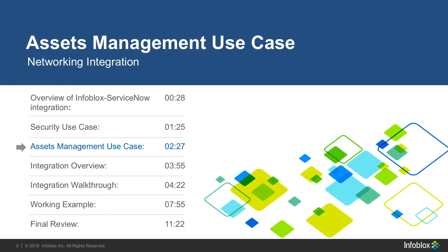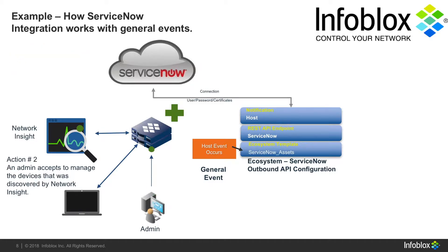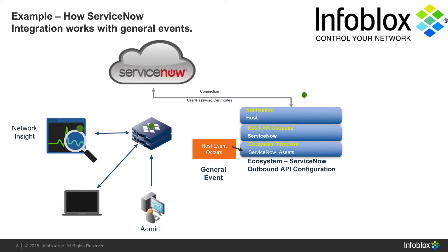Now let's take a look at the second use case. Here, we're integrating with ServiceNow CMDB, and in this case we're able to pass information about devices, networks, and IPv4 and IPv6 addresses. The Infoblox Network Insight found information about the endpoint. Note that you don't actually need Network Insight for the integration, but it provides additional information that you might want to see. Next, an administrator decides to create an asset for the endpoint on the Infoblox grid, which causes ecosystem templates to be triggered, sending information to ServiceNow with information about the asset.